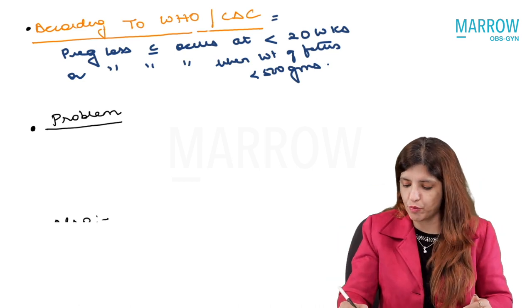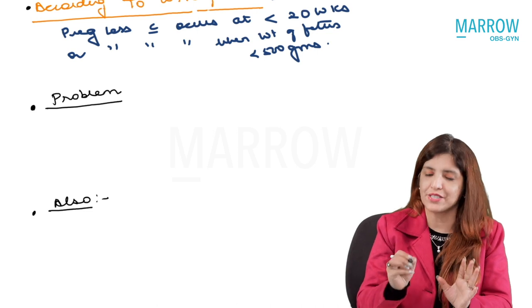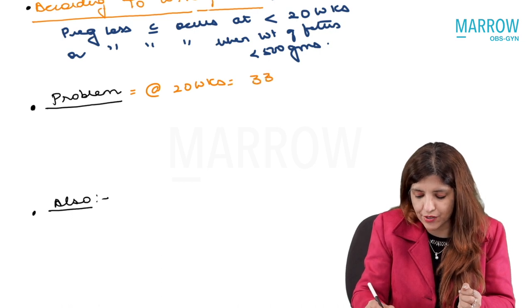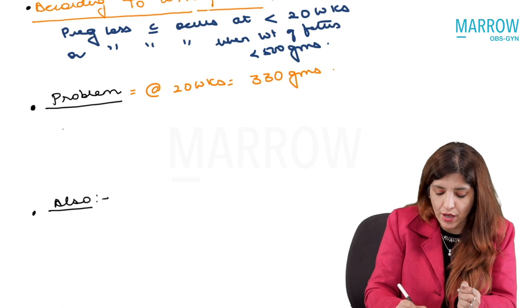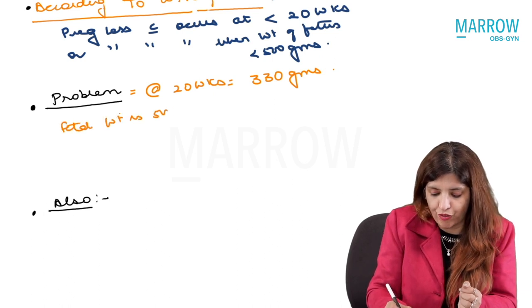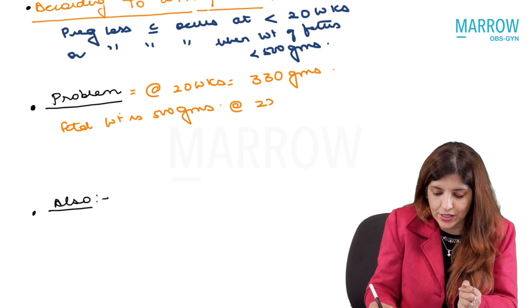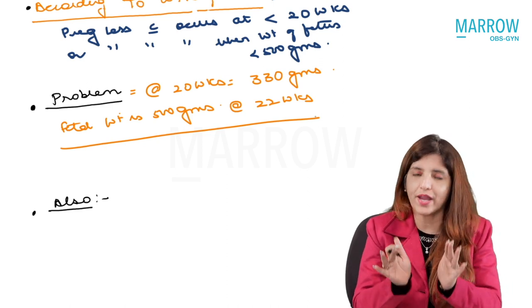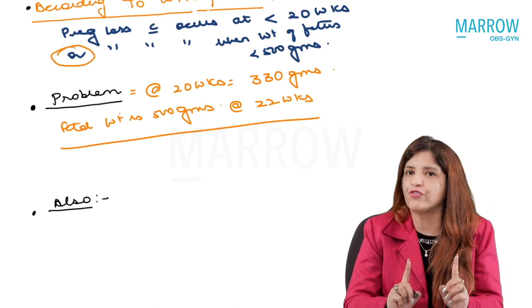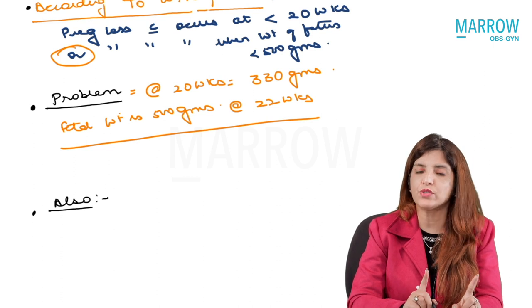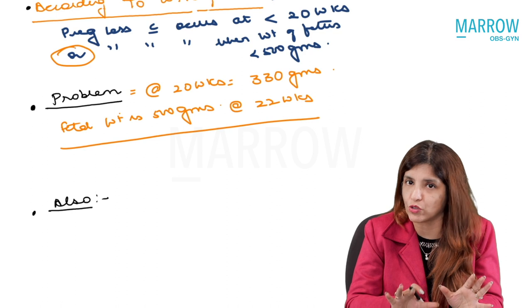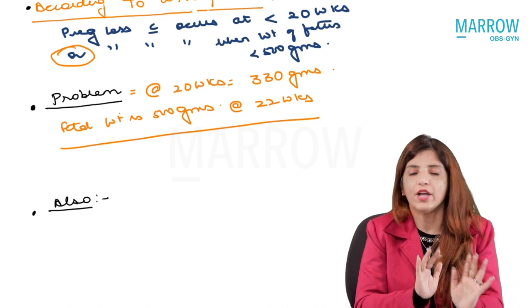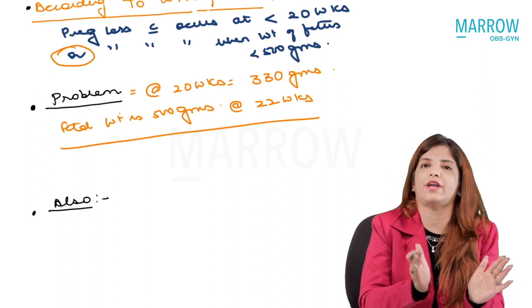Why I am stressing on this point is because a problem arises: at 20 weeks the weight of the fetus is 330 grams, whereas fetal weight is 500 grams at 22 weeks. So you are not going to interchange these things. When talking about abortion in terms of weight, fetal weight must be less than 500 grams. When talking in terms of gestational age, gestational age has to be less than 20 weeks, not 22 weeks. Weight of the fetus is 500 grams at 22 weeks.